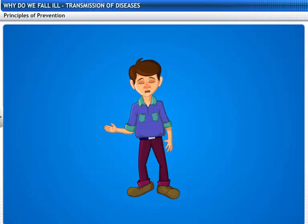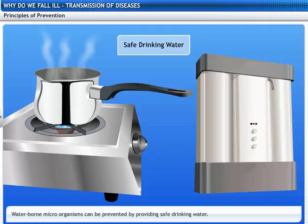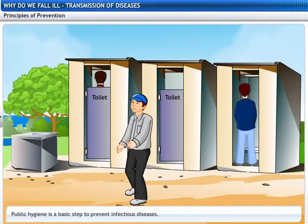How can we prevent infectious diseases? Airborne microorganisms can be prevented by providing living conditions which are not overcrowded. Waterborne microorganisms can be prevented by providing clean drinking water. Vector-borne diseases can be prevented by keeping our surroundings clean. This will not allow mosquitoes to breed. Public hygiene is a basic step to prevent infectious diseases.